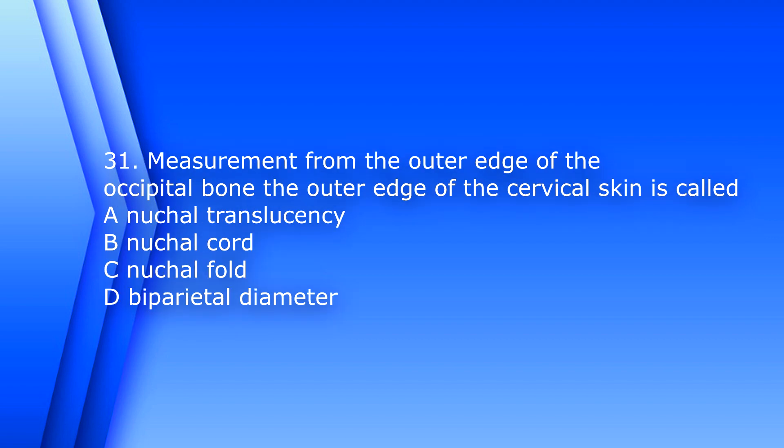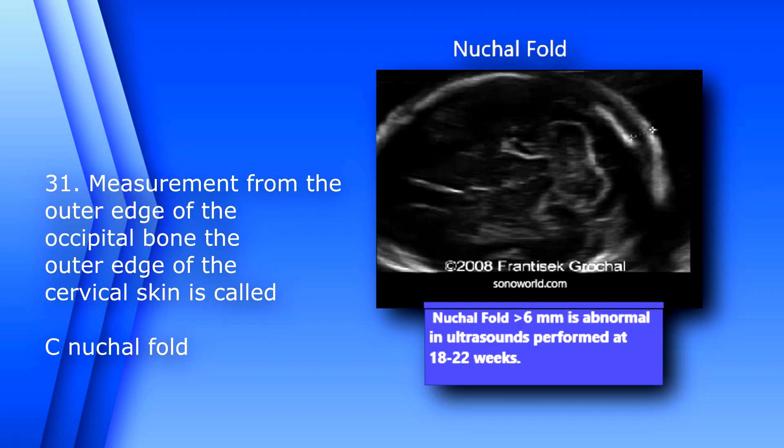Question 31: Measurement from the outer edge of the occipital bone to the outer edge of the cervical skin is called A) nuchal translucency, B) nuchal cord, C) nuchal fold, or D) biparietal diameter. The answer is C, nuchal fold.